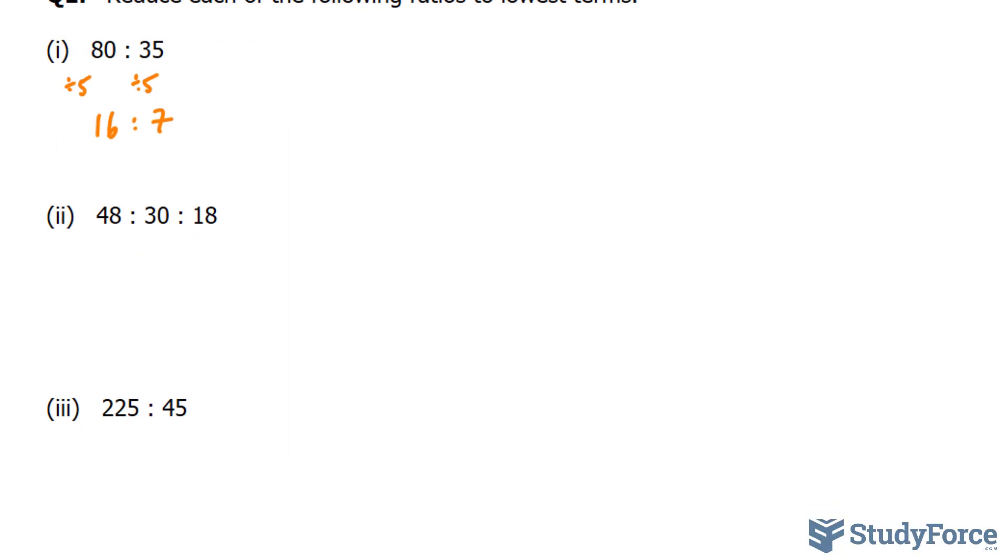Let's try the next. 48 to 30 to 18. All three of these numbers are even, so we can divide each of these by 2. Now, of course, there are better options. For example, I can divide each of these by 6. Eventually, if you reduce it correctly, you will end up with the same answer. So I'm going to start with 2. 48 divided by 2 is 24. That becomes 15 and that becomes 9. All three of these numbers are also divisible by 3. So I'll divide each of these by 3, where I end up with 8 to 5 to 3. That's the lowest it can go.